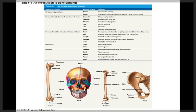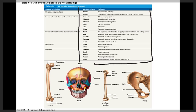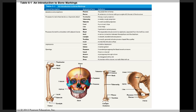It will be important for you to look at this table, which shows the bone markings. Throughout this chapter and throughout the unit on bone, we will talk about these anatomical terms and you need to know their definitions. For instance, a process means any projection or bump, whereas a tuberosity means a smaller, rough projection, and a tubercle means a small, rounded projection.